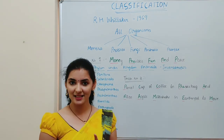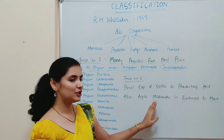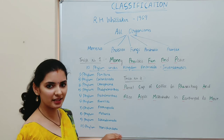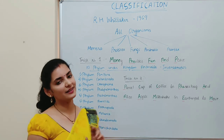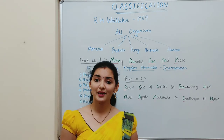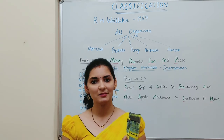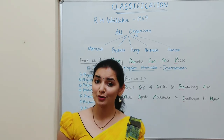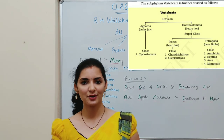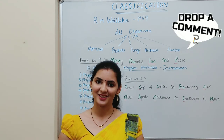Isn't it easy? So if you remember this simple sentence, you can remember all the names of the phyla under invertebrate, that too in a correct sequence. That is about the tricks to remember the five kingdoms and ten phyla under invertebrate. If you want to know about the tricks to remember the classification of chordates, comment in the comment box. Thank you.